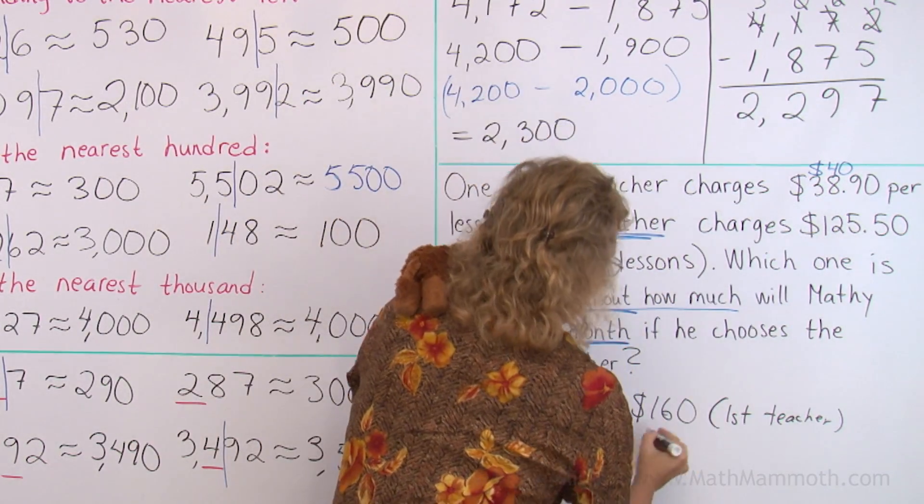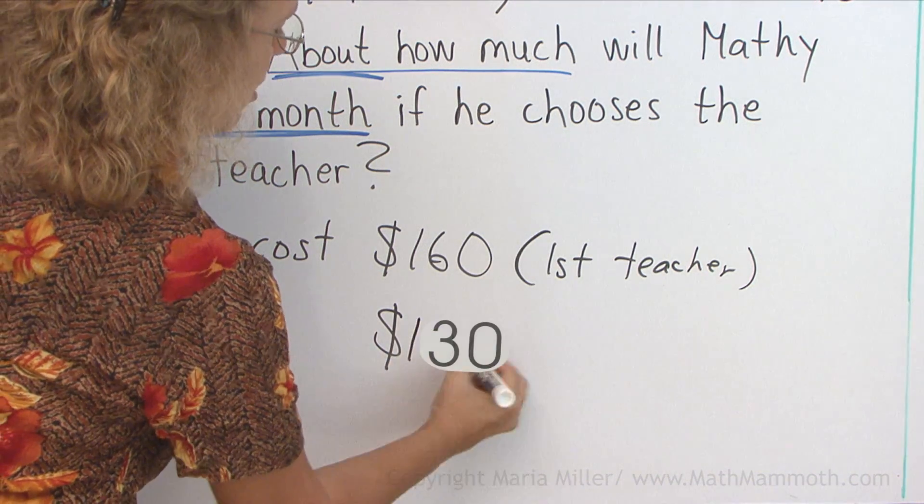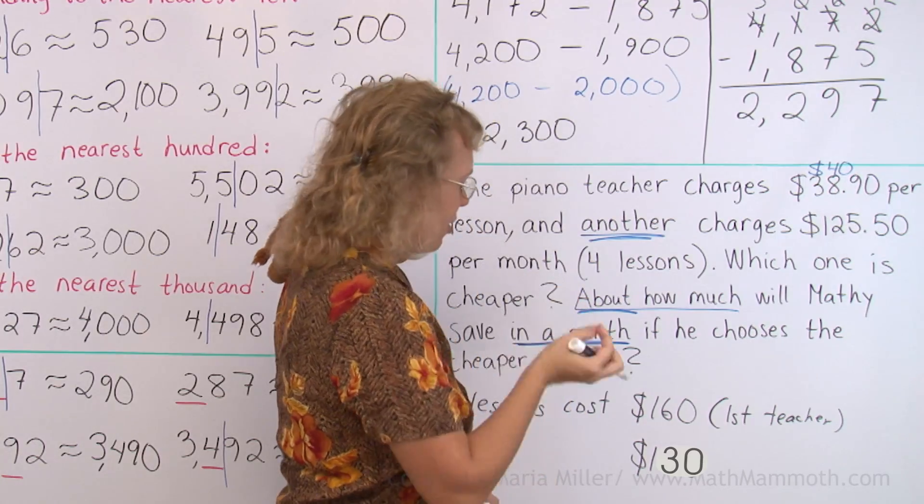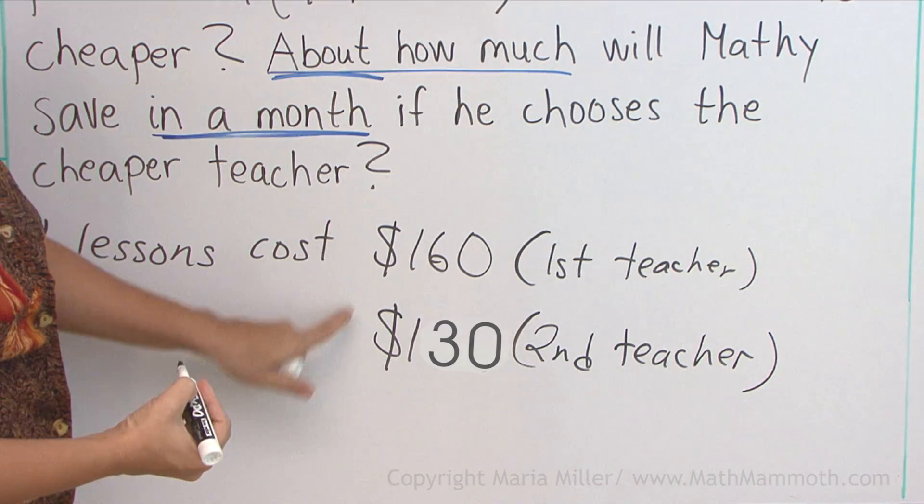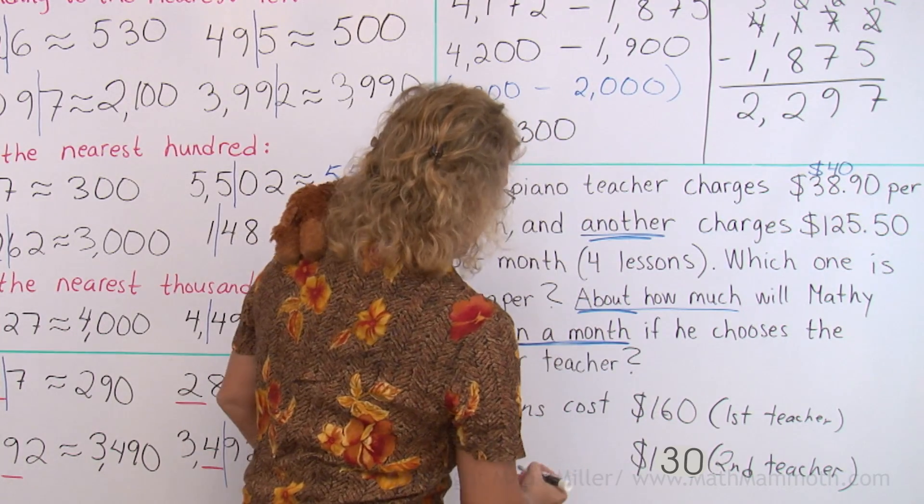And then four lessons cost how much with the second teacher? Again, I'm going to round my number. I think I can just round it to the nearest ten, to $130. And the difference is how much he is going to save, which is $30.